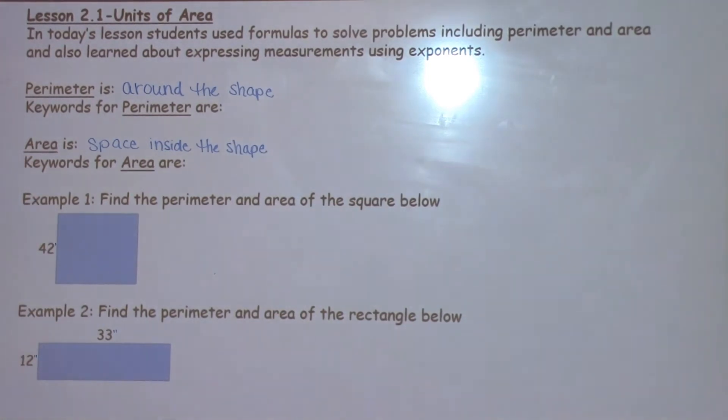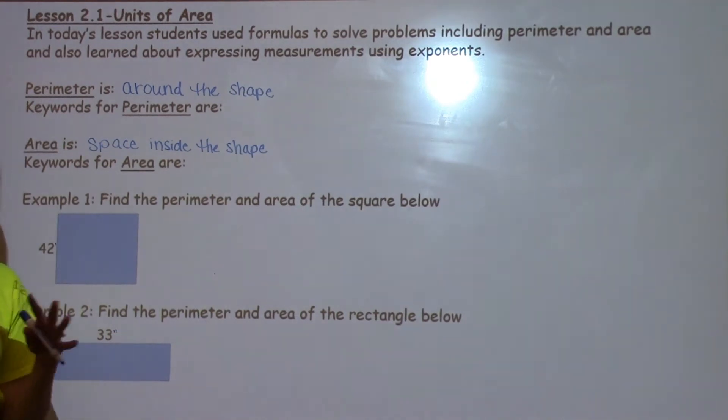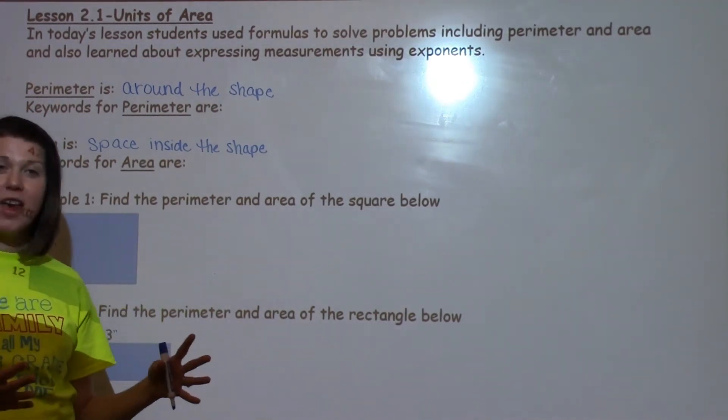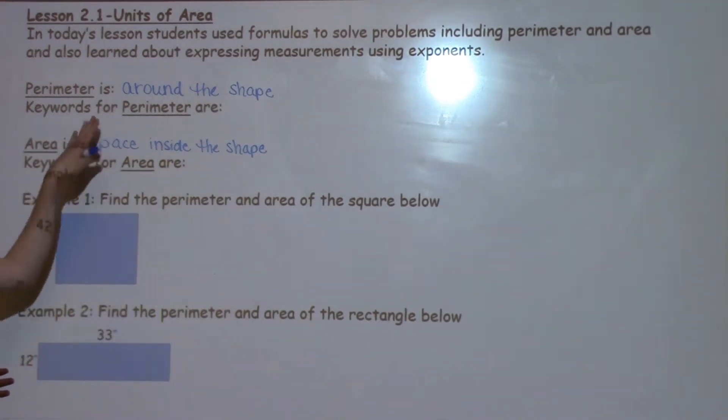Perimeter is the area around the shape. A few of the words that the sixth graders need to know were around, frame, border, fence. Those words are going to indicate perimeter.